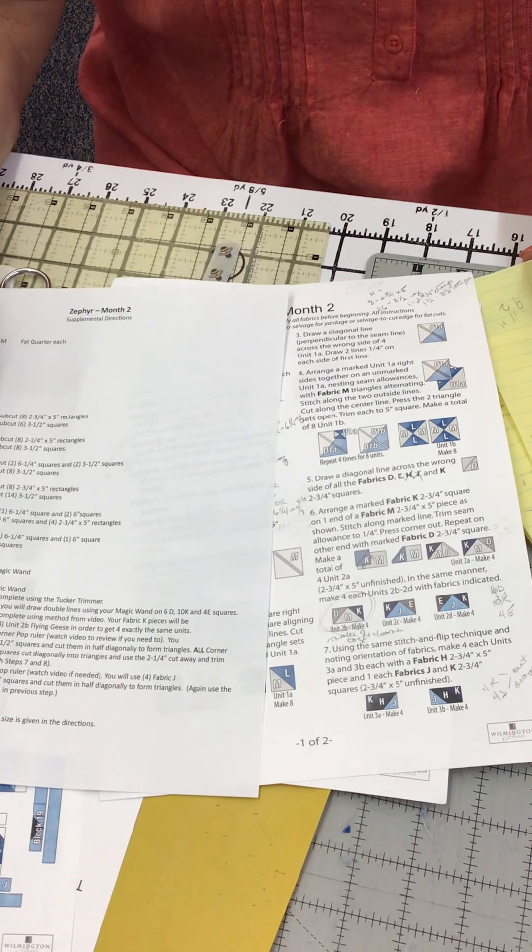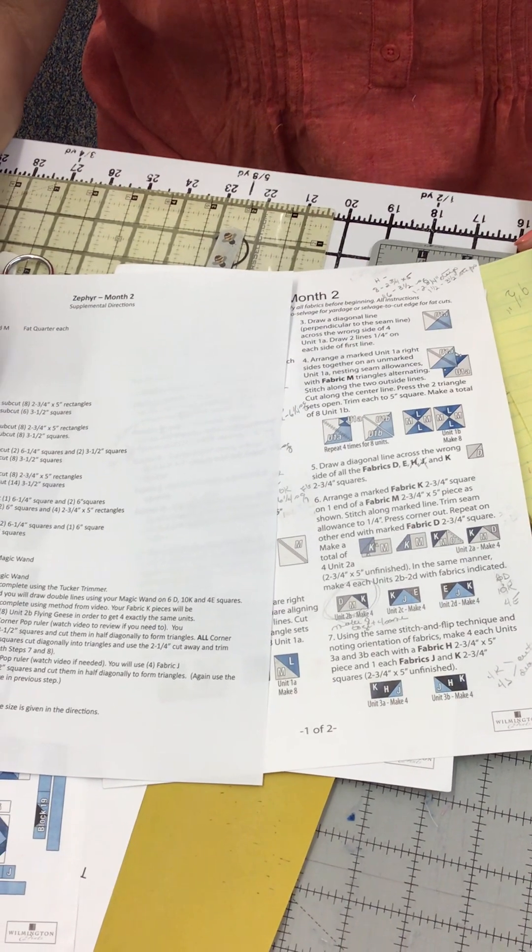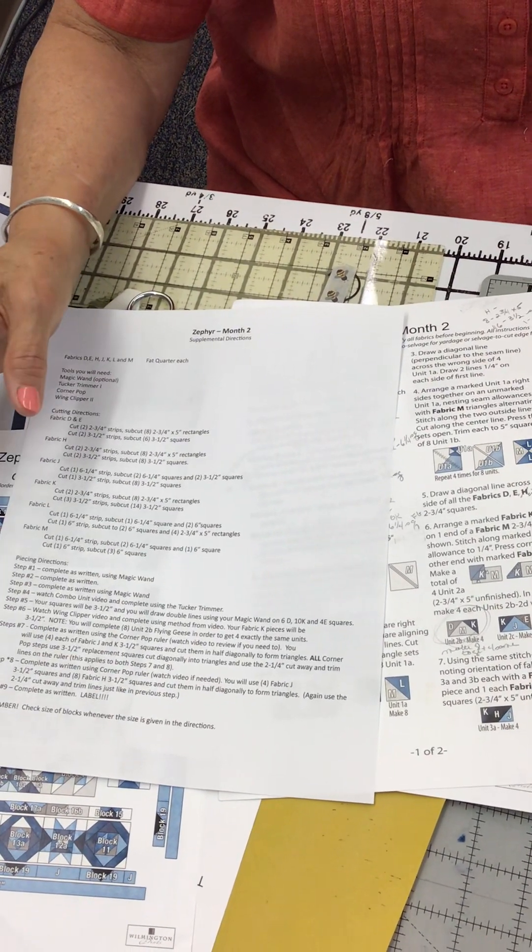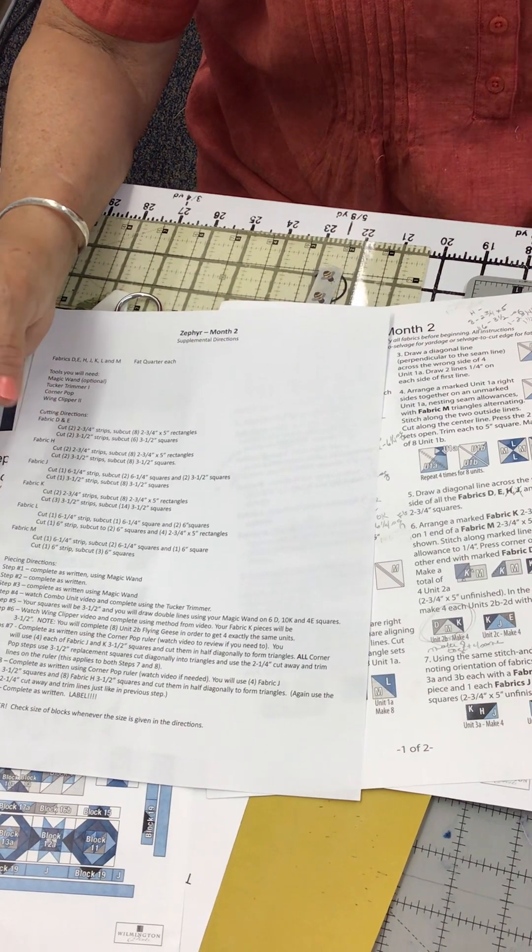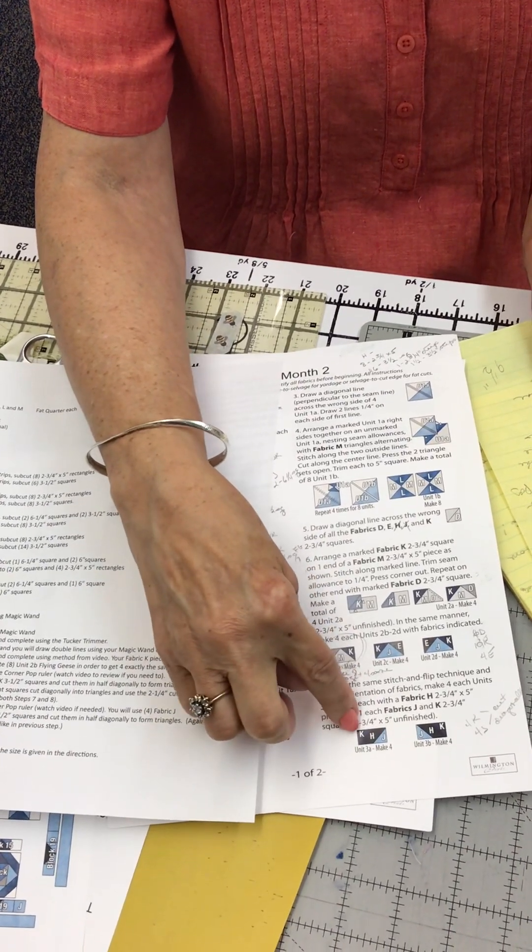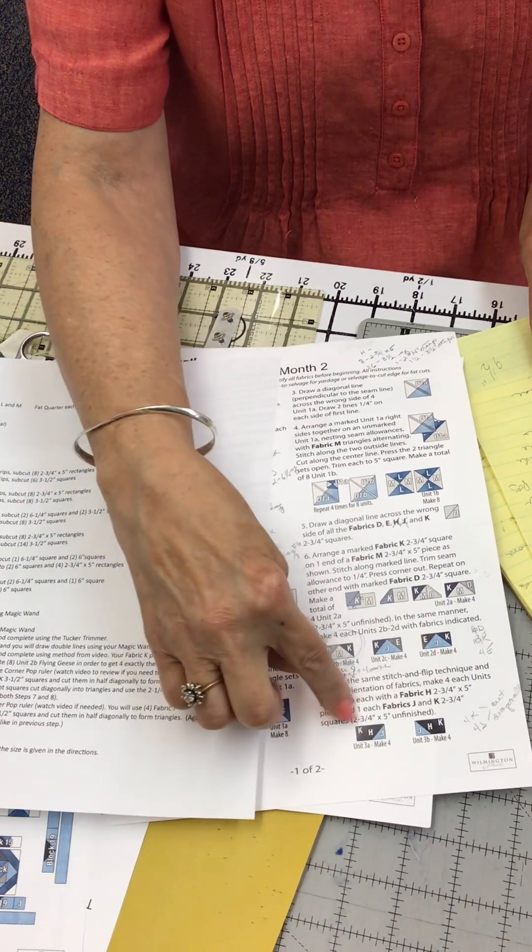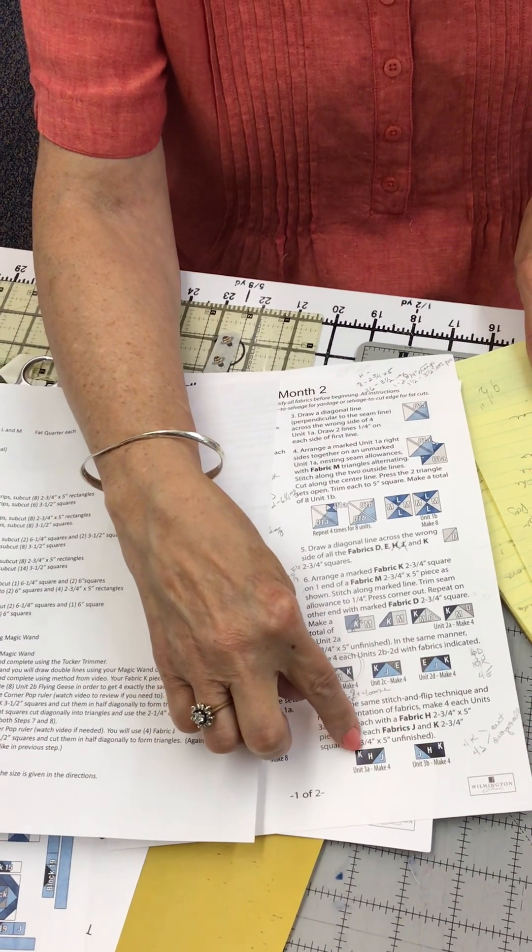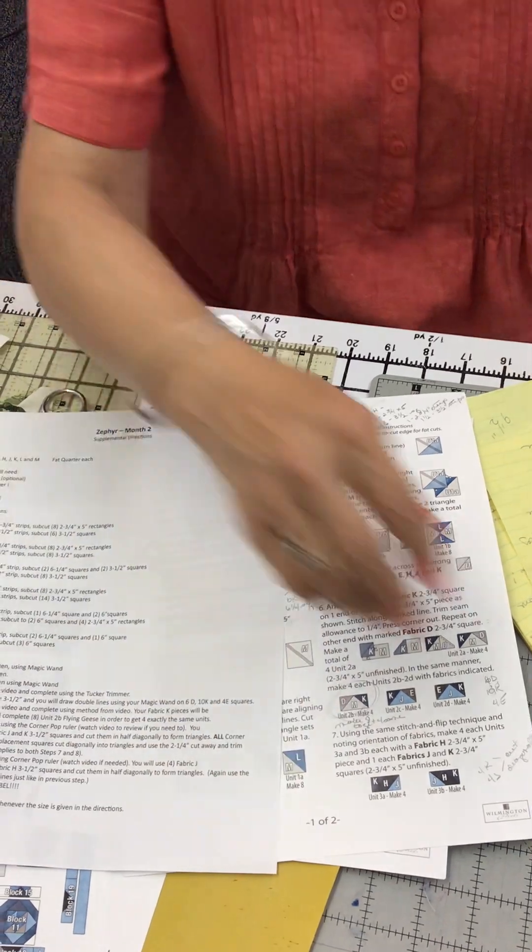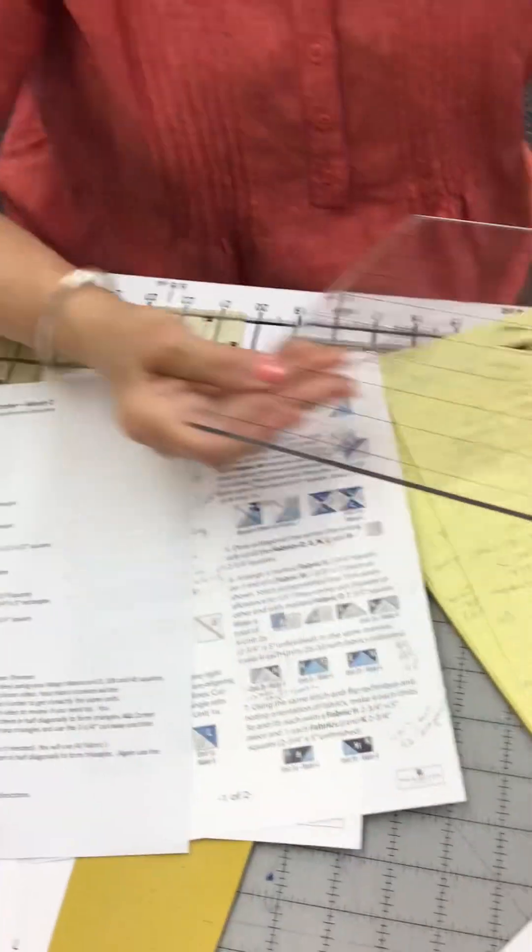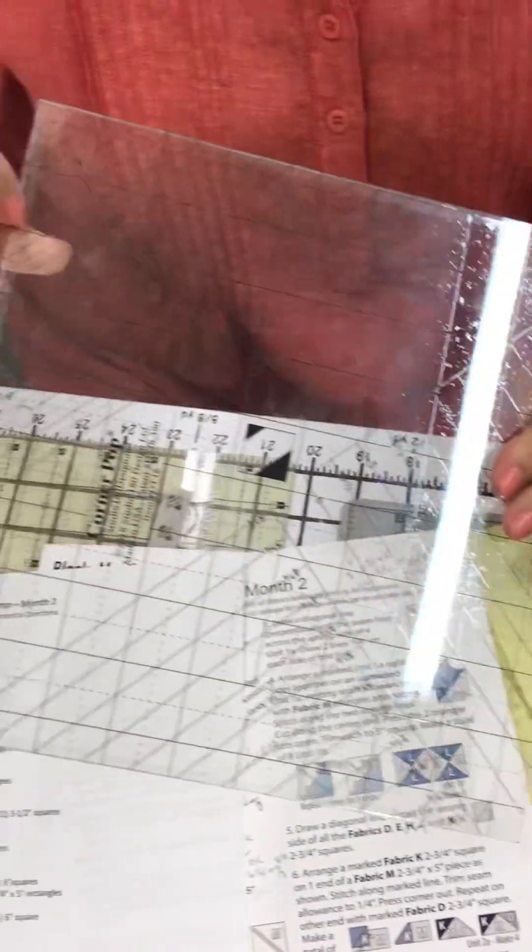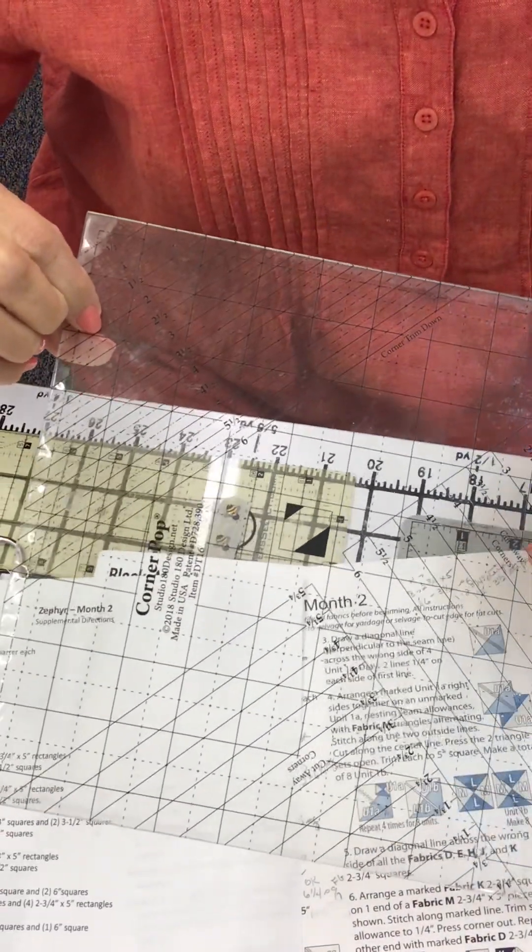Step seven is corner pop. You will use four J's and four K units that are three and a half inches and cut them diagonally. You will not be drawing lines. You'll be cutting them diagonally. If you need a review of the corner pop, watch the corner pop video on our website. And be sure to note the orientation of how the corners go. Here you started with fabric H in the middle. You added K in this upper corner, J in that lower corner. So watch your orientation and be sure you're trimming away the correct corners. All corners will be trimmed away using the two and a quarter inch trim, which is right here. You'll be using the two and a quarter inch trim. And then you'll be using the two and a quarter inch trim down.